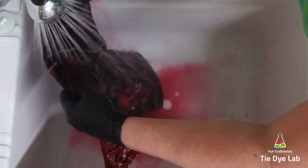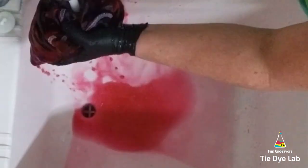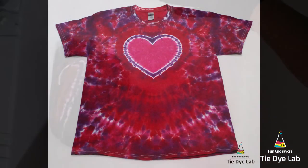Then I put the shirt in the washing machine and I washed it using some hot water and a little bit of Dharma's textile detergent, dried it in the dryer, and this is what our shirt looks like.